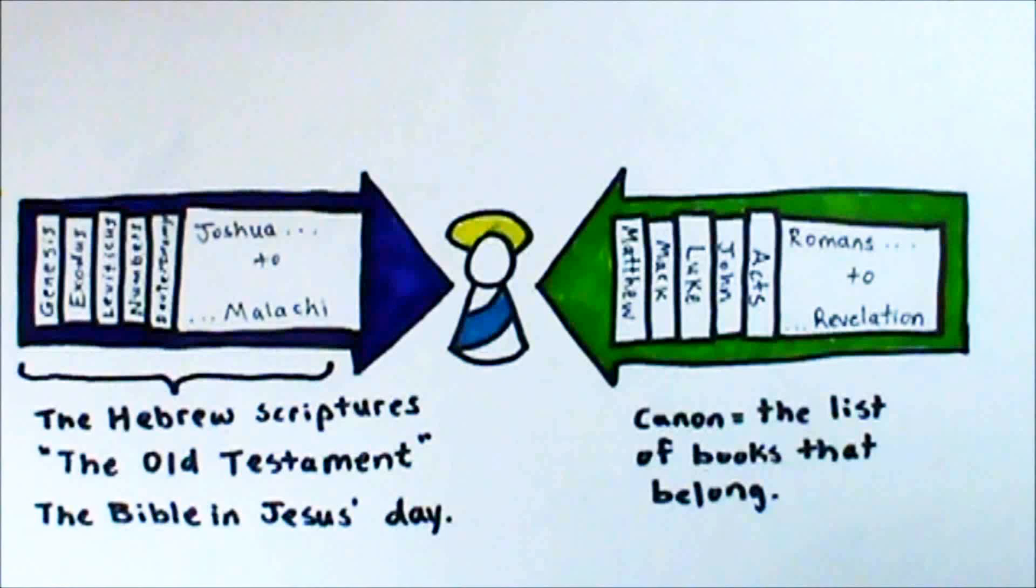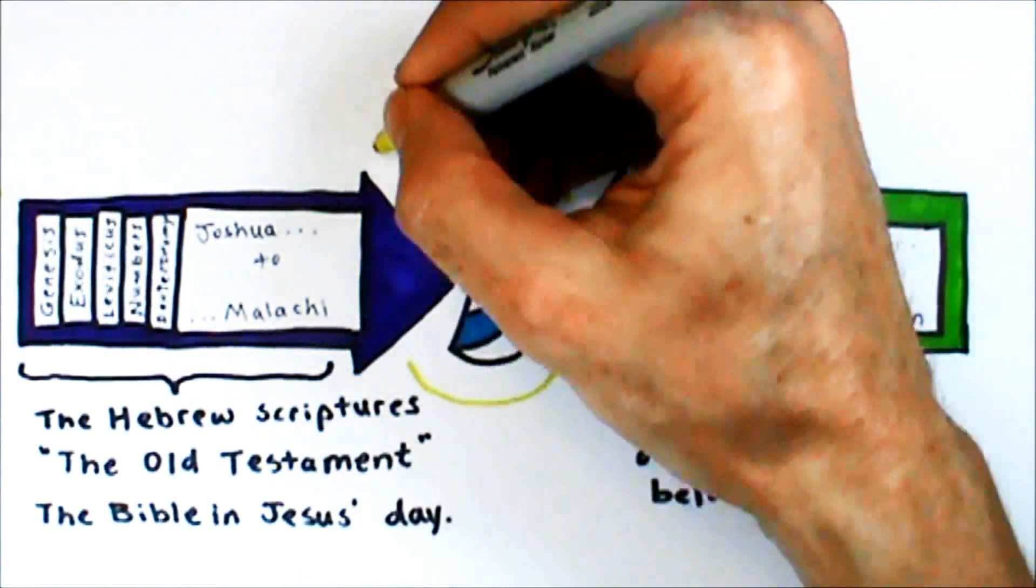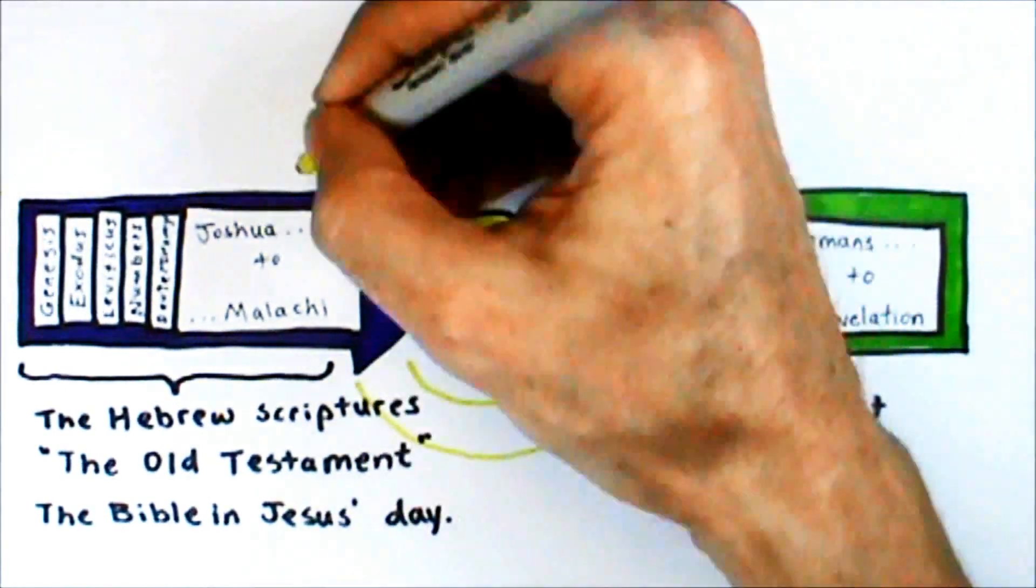So because it's impossible to know who he is without knowing the story that he claimed to fulfill, Christians have always insisted that the Old Testament, the Hebrew scriptures, are an integral part of God's word, and that it is not complete without them.